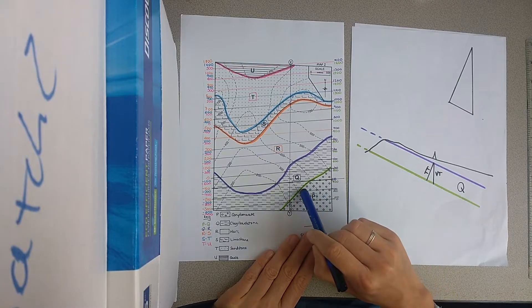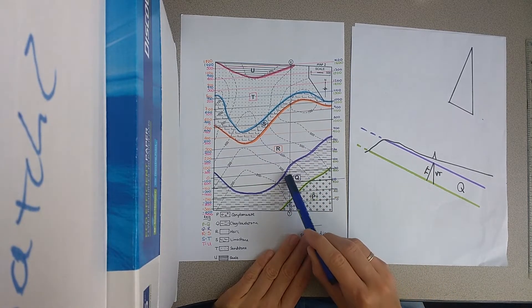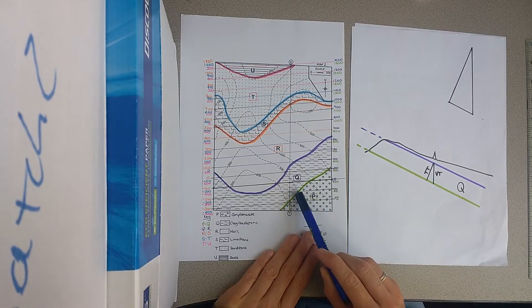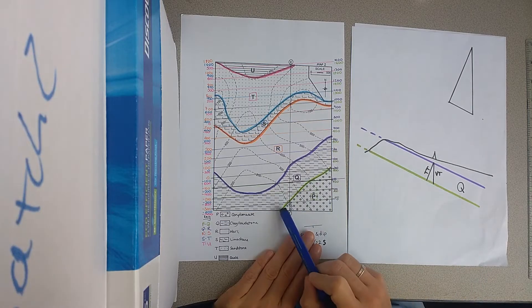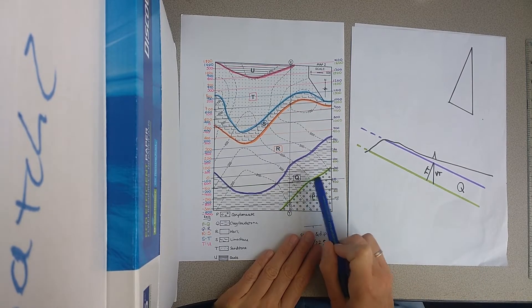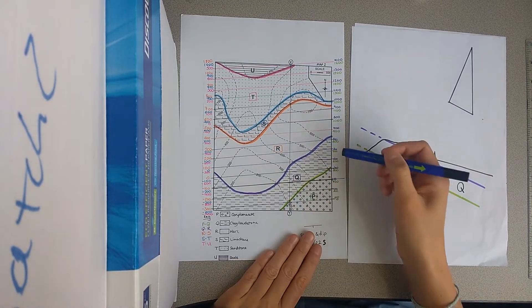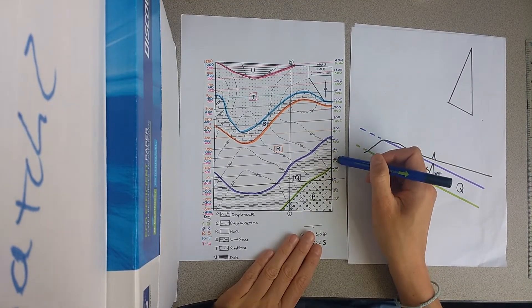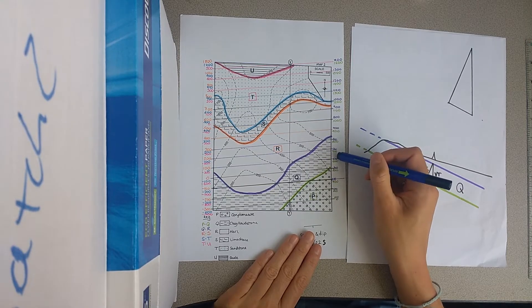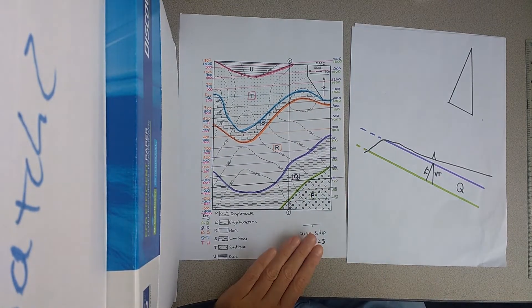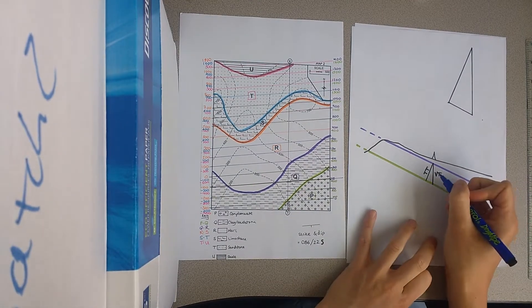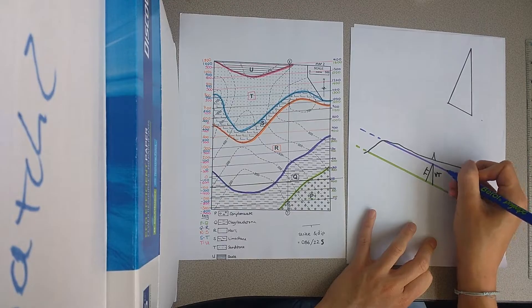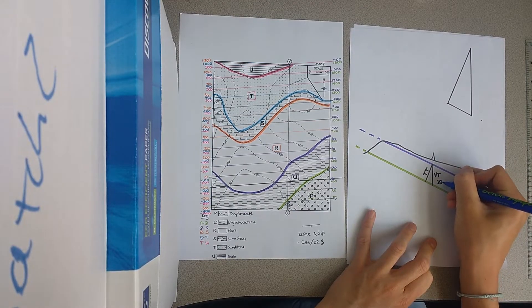And if you notice, this 100 structure contour goes through the 300 metre elevation for this green surface at the bottom of Q. So the structure contours for the green surface are 300, 400, 500, 600. You can see that there is a 200 metre difference between the structure contours for the purple surface and the green surface, which are the upper and the lower bounding surfaces for unit Q.